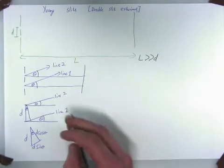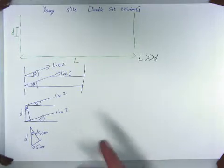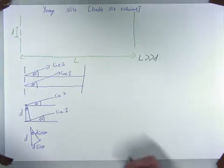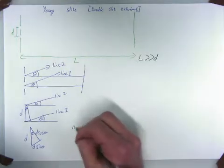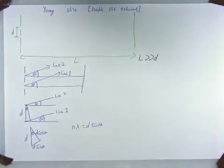Now, if line one and line two are n times lambda away, then the maximum will overlap, so it will cause constructive interference. And when n times lambda equals d sine theta, for constructive interference.